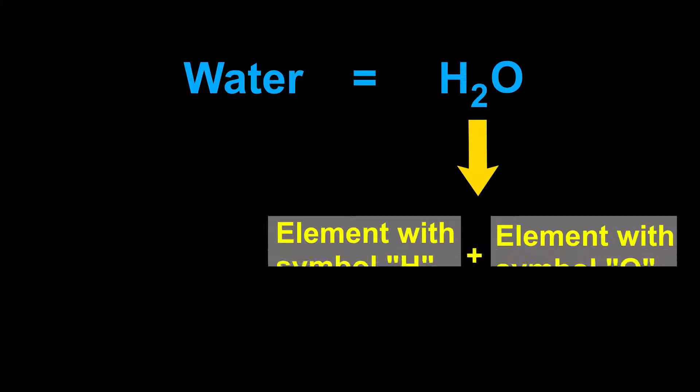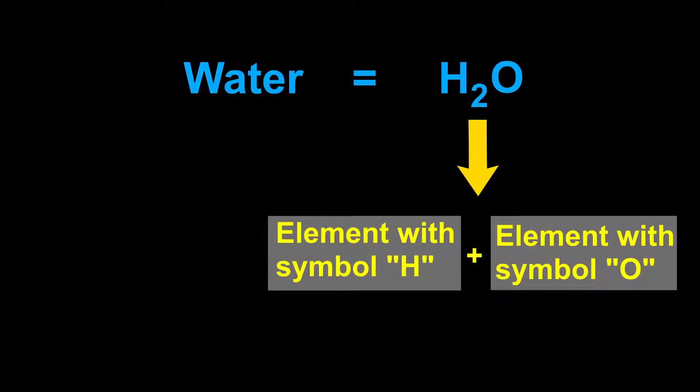For example, chemical formula of water is H2O. From this formula, it is clear that element with symbol H and element with symbol O are present in water. We know that H symbol belongs to hydrogen and O symbol belongs to oxygen. So it is clear by the formula that water is made from hydrogen and oxygen elements.